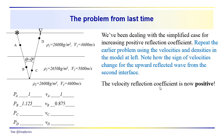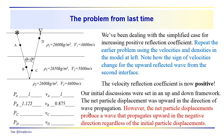So in this case, the velocity reflection coefficient will be positive, which means the particle displacements on the leading edge of the wavefront are going to be moving downward. As you've begun to fill out this table, you've seen that the velocities are indeed going to be in the positive direction. The key point is that particle displacements produce a wave that propagates upward in the negative direction, regardless of whether the initial displacements are positive or negative. In this case, the initial particle displacements are going to be negative — in the downward direction.